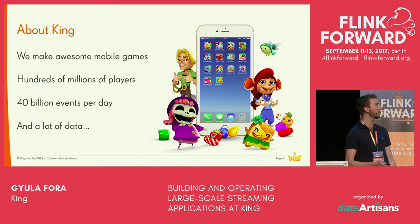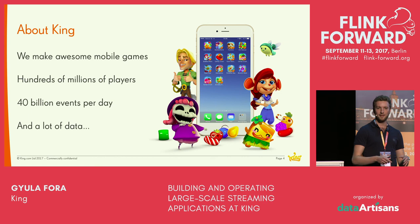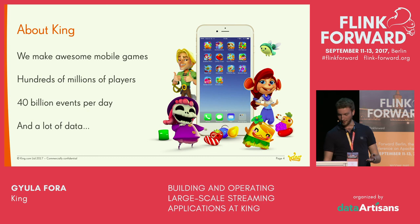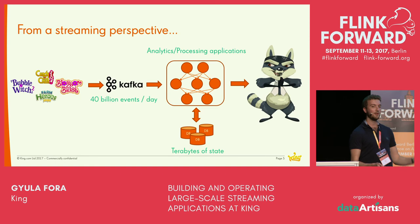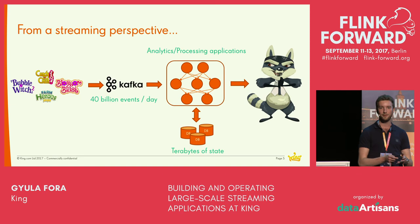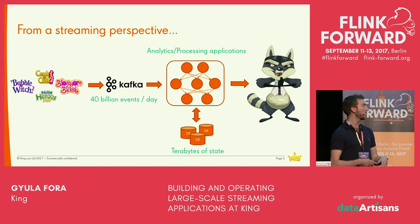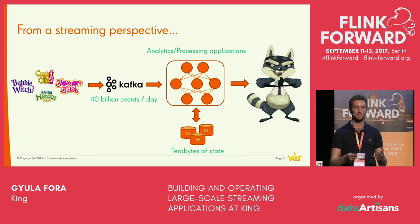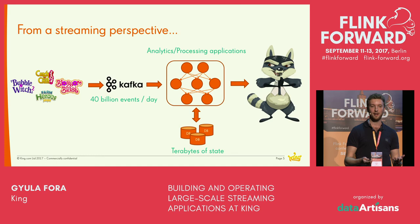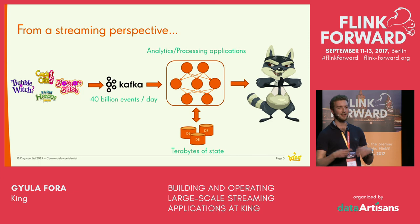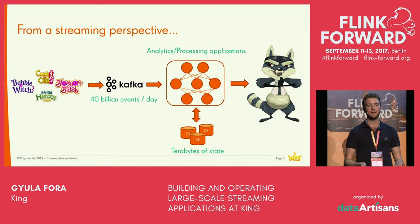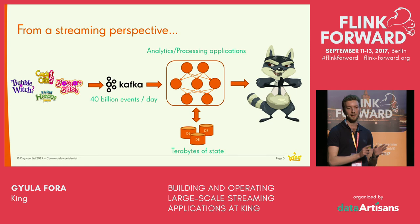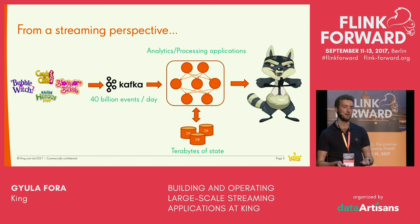What does this mean from a data analytics perspective — more importantly, from a stream processing perspective? On the left-hand side, we have the game client: somebody playing Candy Crush on their mobile phones, tablets, or on Facebook. As they play, the games generate a bunch of events for different things that happen inside the game — when you start up your client, start a new round, make a purchase, finish a level, or close the application. All these actions generate events that are buffered briefly on the client, then transferred to the game servers, which ultimately write them to Apache Kafka. This is where the streaming part begins for us.